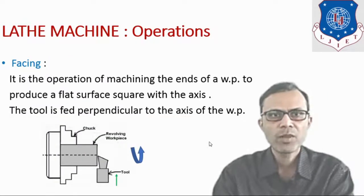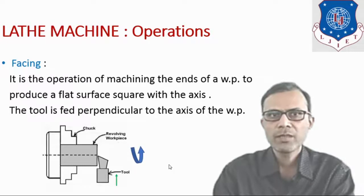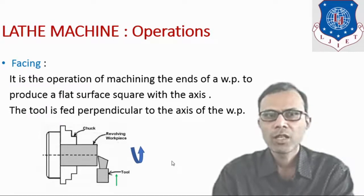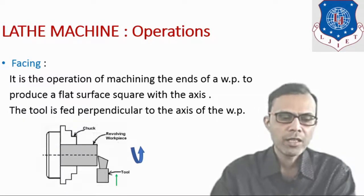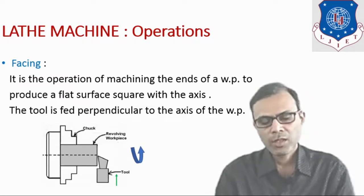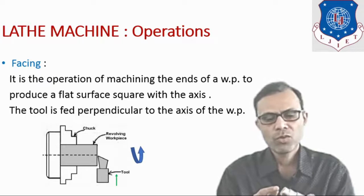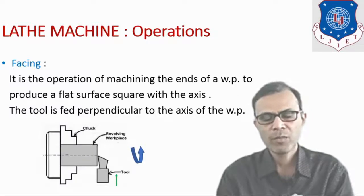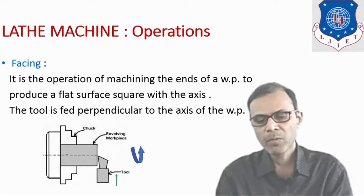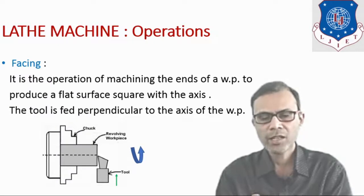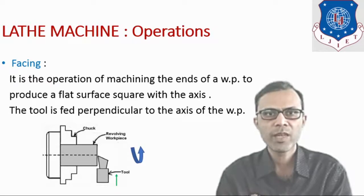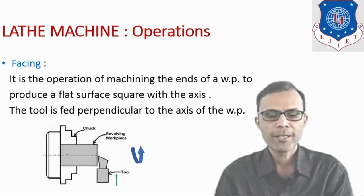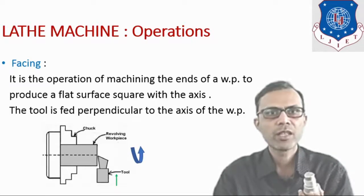The next operation is the facing operation. It is the operation to produce a flat surface at the end of the workpiece. Here in the diagram, the workpiece is held in the chuck. We have to produce the end surface as a flat surface. When the workpiece is rotating in the chuck, the tool is provided movement perpendicular to the axis of rotation — this is known as the cross feed, provided by the cross slide. That kind of operation is known as the facing operation.